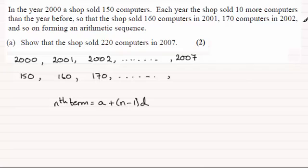We can see that if we take the first term as being 150, in other words a equals 150, the common difference d is that each term goes up by 10. So d is equal to 10.